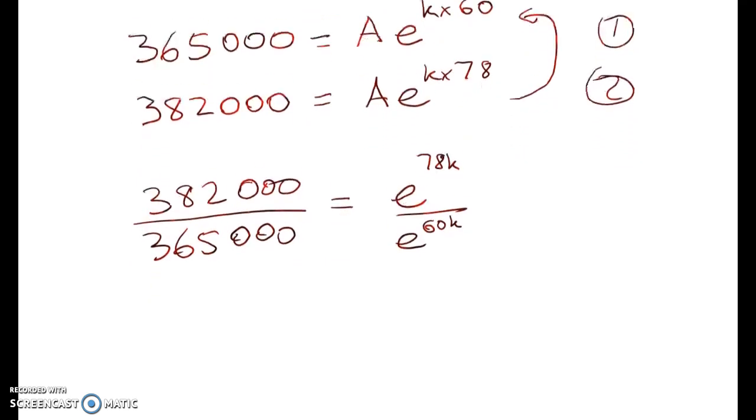We get 382,000 over 365,000 is equal to e to the 78k over e to the 60k. So this is going to give me my value of k eventually. Then I'll need to substitute back in to get A.